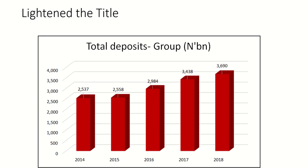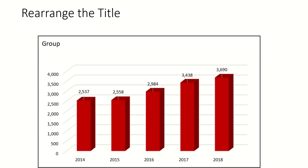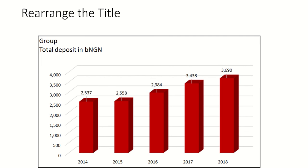To clean up this visual step by step, the first thing is we want to lighten up the total deposits bar. Also, in the title there is something to fix. According to standard, it says 'Total Deposit Group' — but the group name should come first. So the title structure becomes: company or department name first, then what the chart is about (total deposits), then the currency notation (B for billion, NGN for the sign), and finally the year range — 2014 to 2018.